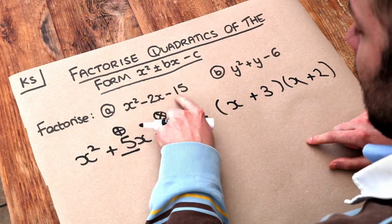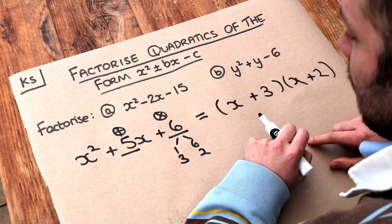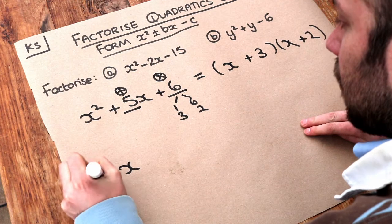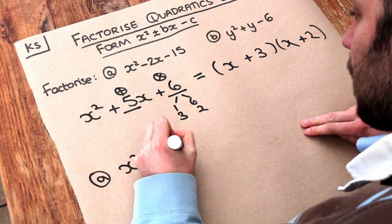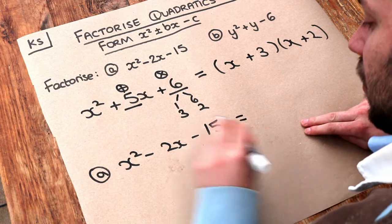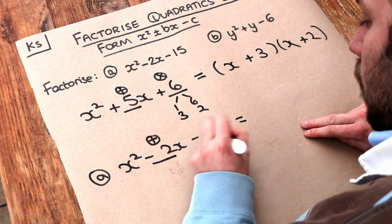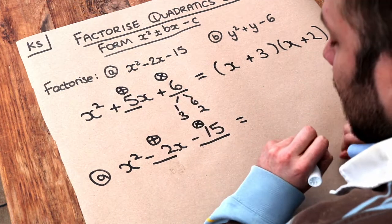If we were to expand out these brackets we would get this expression here. Now these are slightly more difficult because we've got some negatives and a mixture of negatives and positives floating around, but the principle is still the same. If we just write out this first one, x squared minus 2x minus 15, we need to find two numbers which add to give negative 2 and multiply to give negative 15.